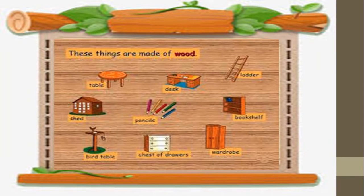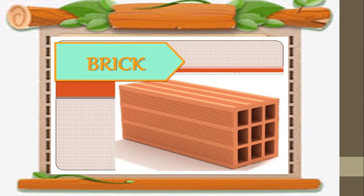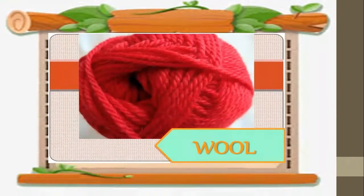So here are things that are made of wood, like tables, pencils, desks, etc. Now we will move to brick — we can find brick in buildings. And this is wool; we use wool for clothes.